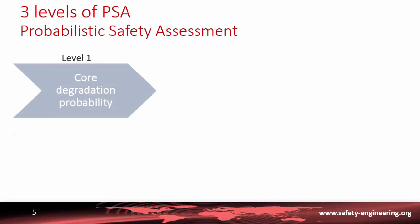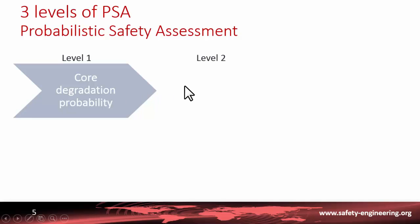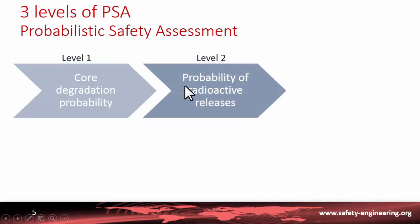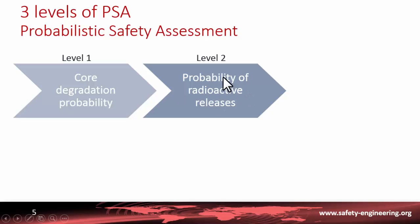There are several types of probabilistic safety assessment — three main levels. Level one looks at the probability of core degradation. Level two goes a step further and takes into account the containment function, because you can have some core degradation, and if the containment function plays its role, there will be no release. But if there is a bypass or a leak in the containment, you can have a radioactive release.